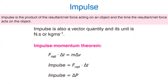Impulse definition: impulse is the product of the net force acting on an object and the time the net force acts on the object. Impulse is also a vector quantity. The unit is kg times m per second, and impulse and momentum together: m times delta v equals impulse, and f times delta t equals delta p.